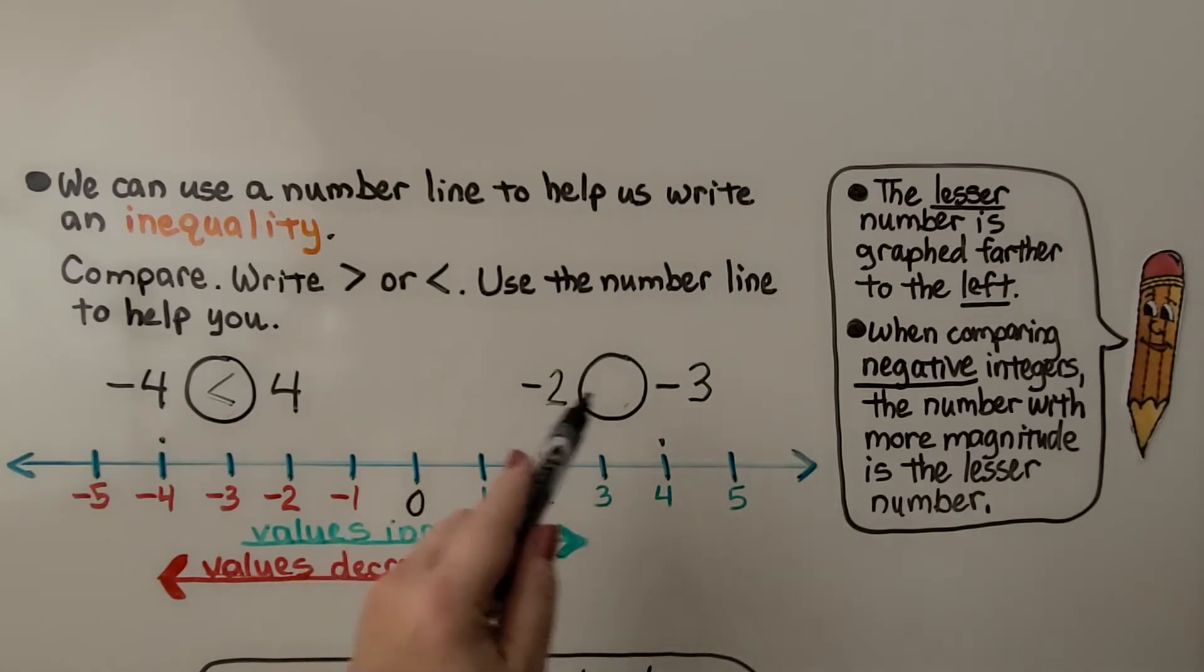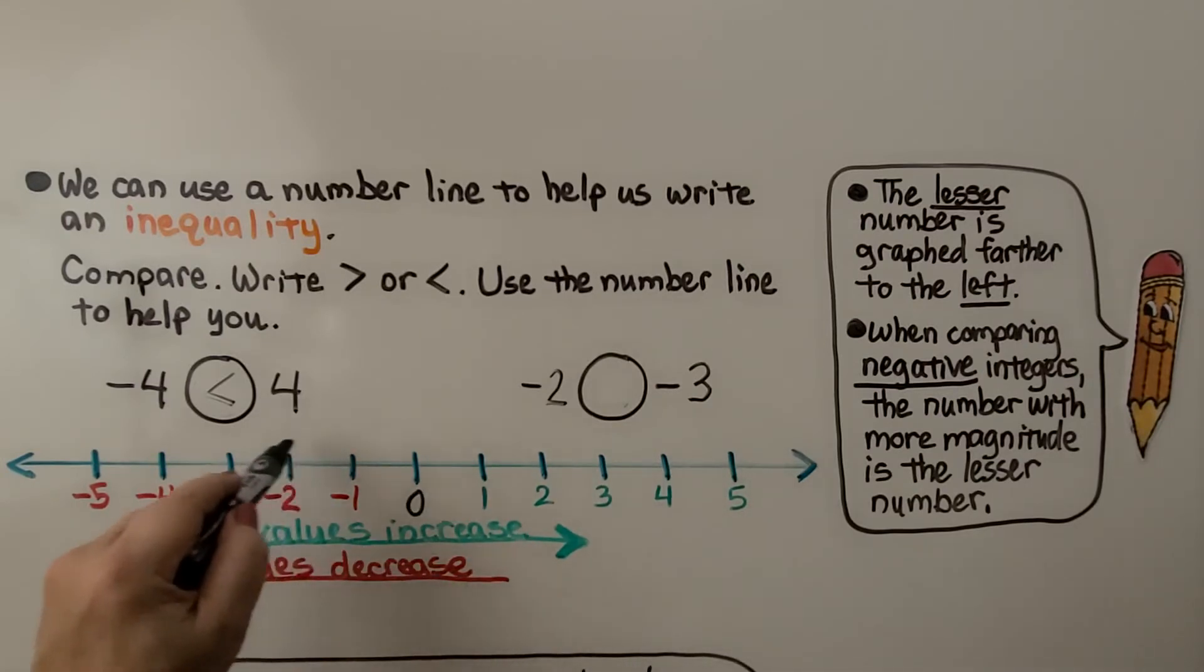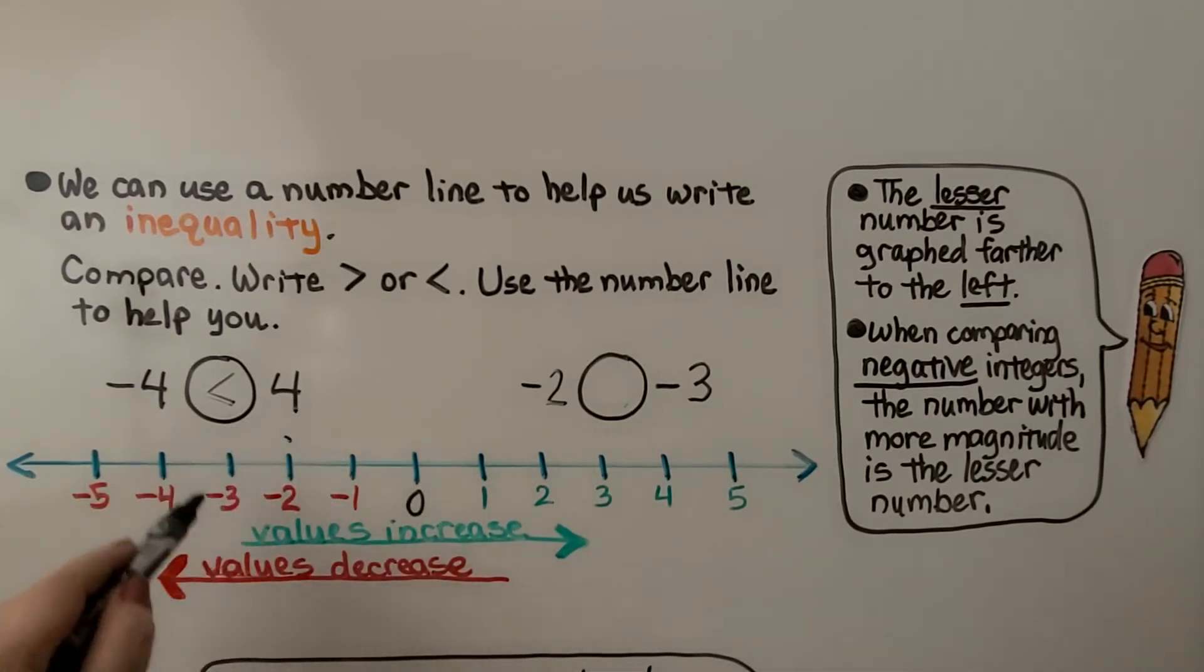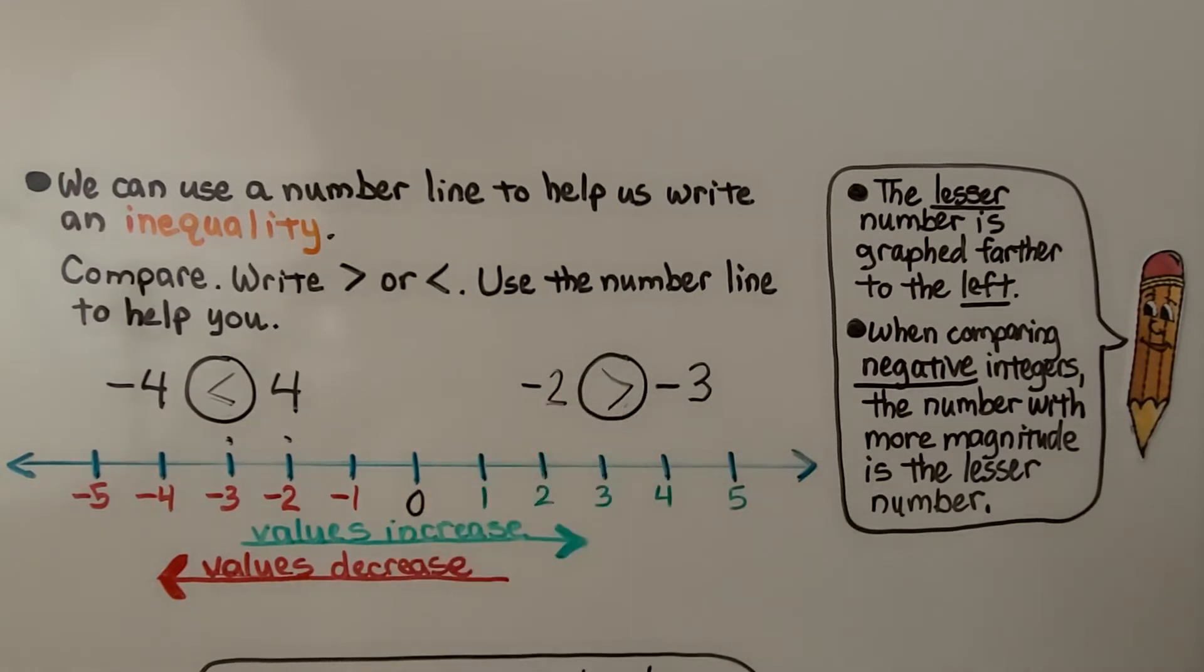Here we have negative 2 and negative 3. Let's clean up our number line. Here we have negative 2 is right here. And negative 3 is right here. The lesser number is farther left. That means negative 3 is the lesser number. That means negative 2 is greater than negative 3.